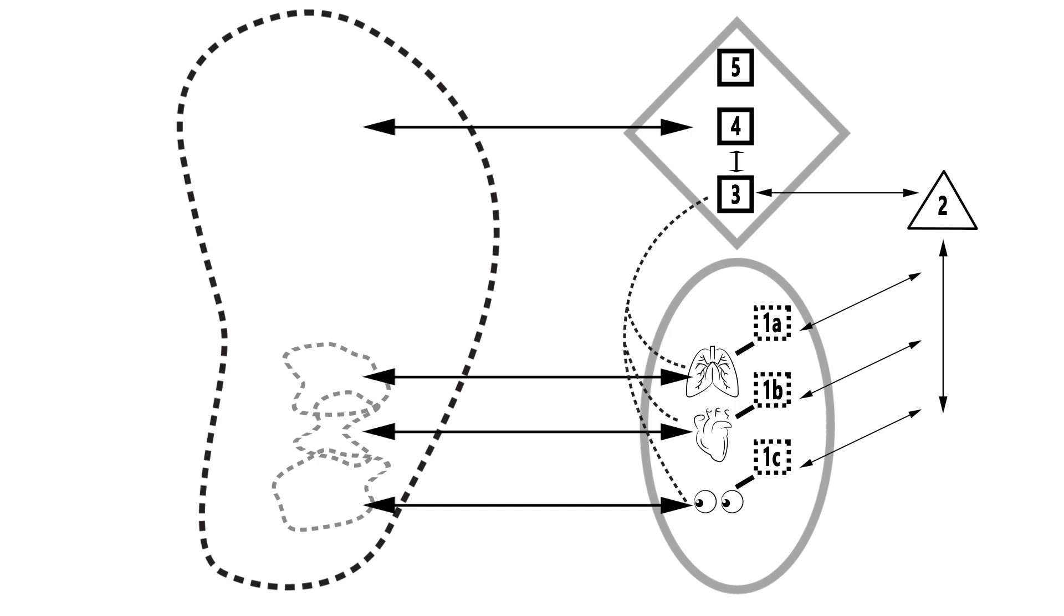System 4 also receives and sends information to the final system, System 5. This is the top of the system, the cerebral cortex. System 5 maintains the identity of the organism and sets policy for the system to work toward. It also resolves conflicts between System 3 and 4.